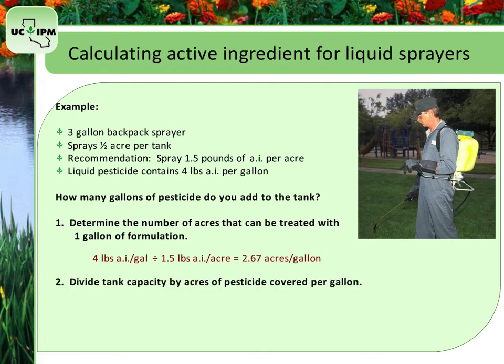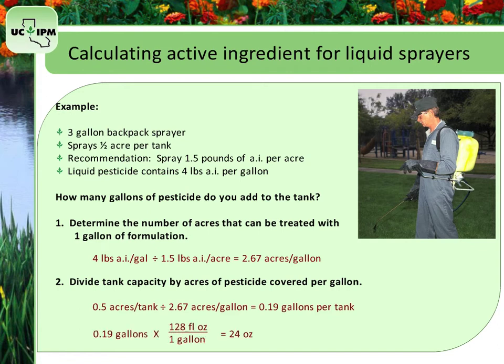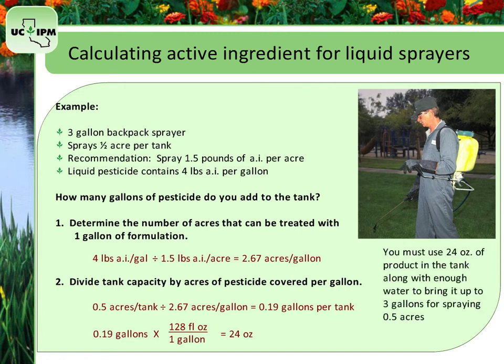Then divide the tank capacity by how many acres the pesticide covers per gallon. So, 0.5 acres per tank divided by 2.67 acres per gallon equals 0.19 gallons per tank. You can convert this to ounces by multiplying by 128 fluid ounces per gallon, giving you 24 ounces. Therefore, you use 24 ounces of product in the tank along with enough water to bring it up to 3 gallons for spraying 0.5 acres.